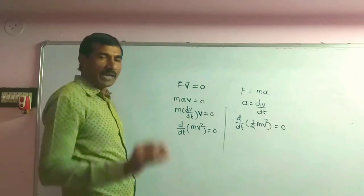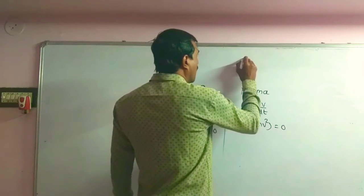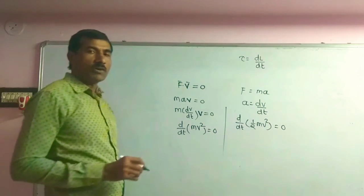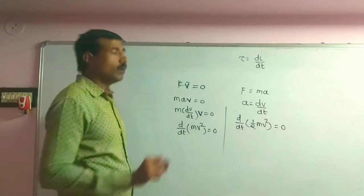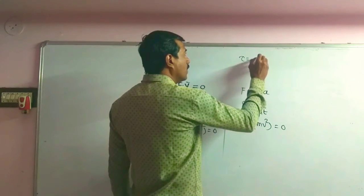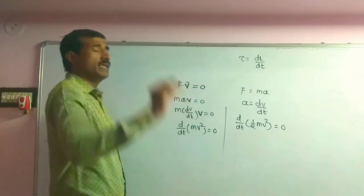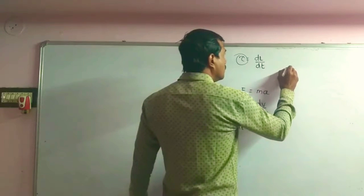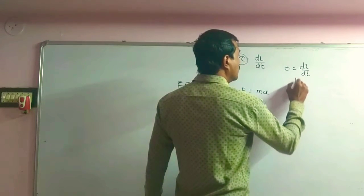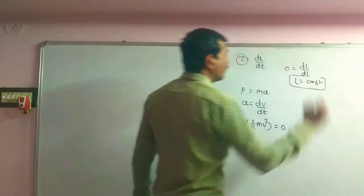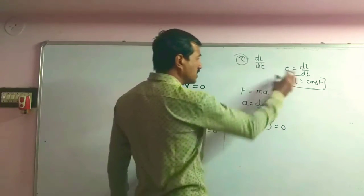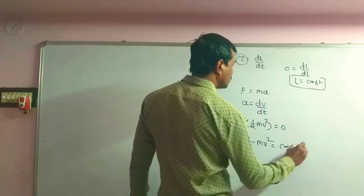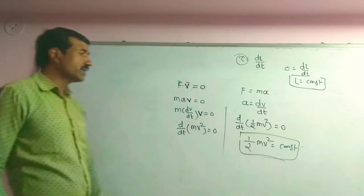An example of this is the conservation principle of angular momentum. Torque equals dL/dt. For conservation of angular momentum: when the torque acting on the body is equal to zero, then 0 = dL/dt, so angular momentum L equals constant. We apply the same process here: 1/2 · m·v² equals constant.